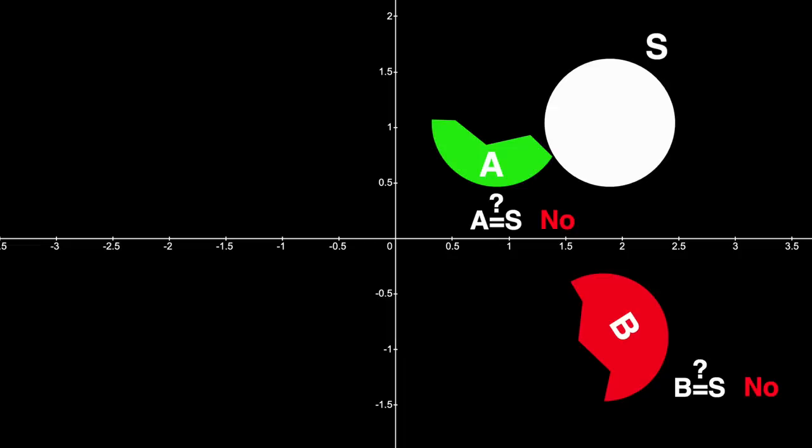But there does exist a set S where this is possible, where you can say yes to both those last two questions. There's a set that you can partition into subsets A and B where if you shift A to the left by one, it becomes S. You get the entire original set back. And if you rotate B by one radian clockwise, you also get the original set back. That's insanely weird.